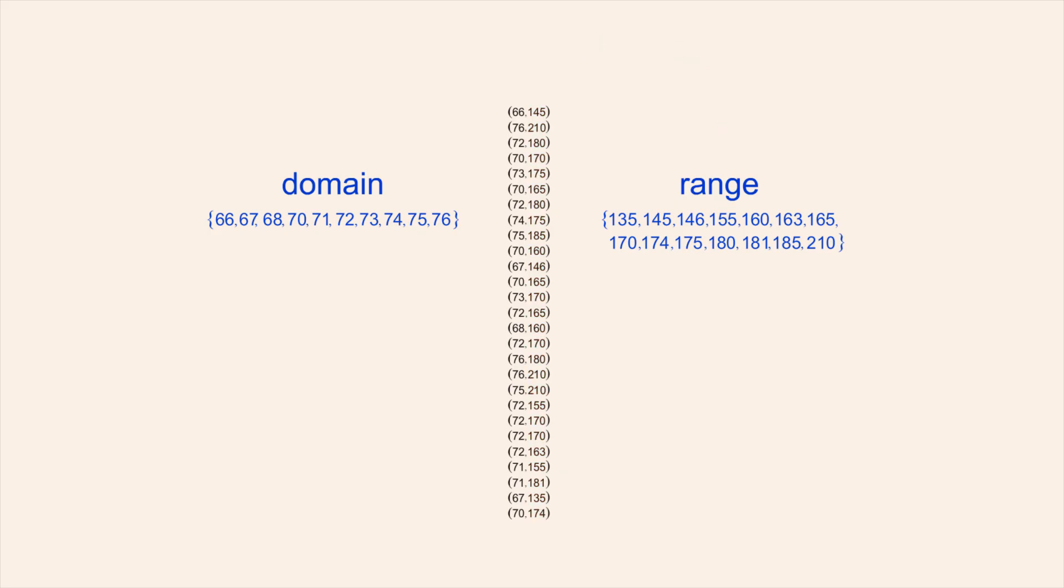Notice that several players have a height of 72 inches or a weight of 170 pounds. But these values are listed only once in the domain and range. This is because the domain and range are sets and every member of a set must be unique. No member of a set may be listed more than once.